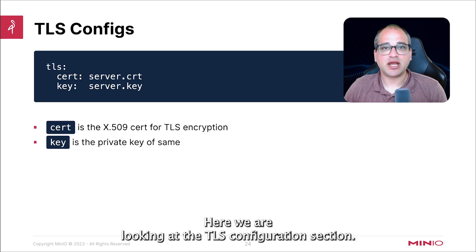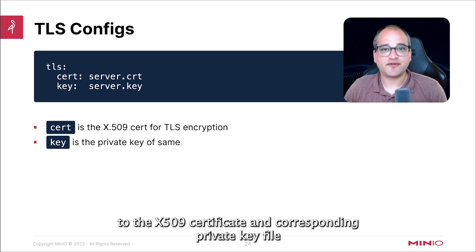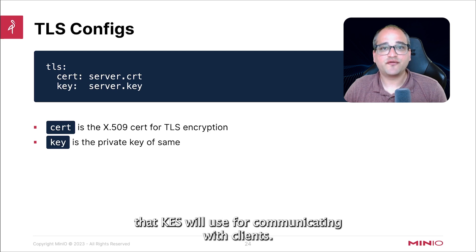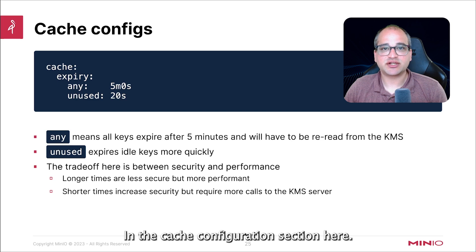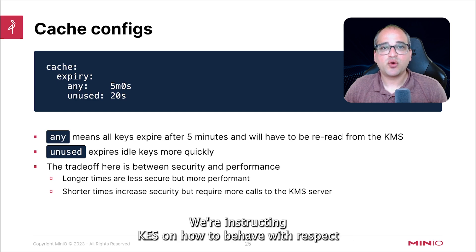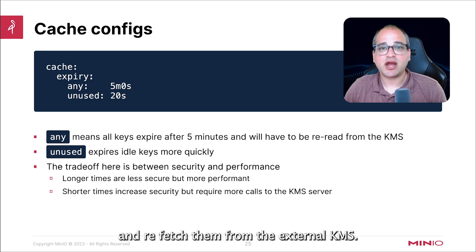Here we are looking at the TLS configuration section. In this section, we're simply specifying the path to the X.509 certificate and corresponding private key file that KES will use for communicating with clients. In the cache configuration section, we're instructing KES on how to behave with respect to how often it should invalidate keys from its own internal memory and refetch them from the external KMS.